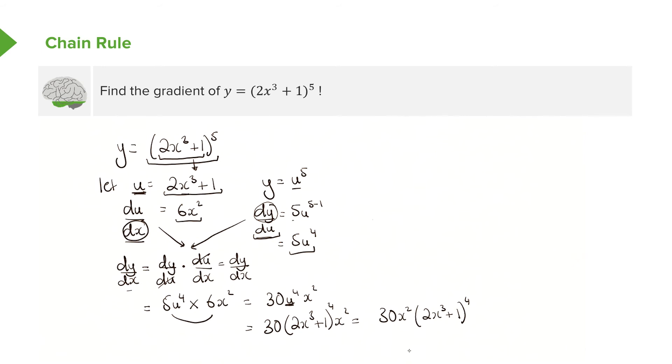And here is your differential, so there you've just found the differential of this function here, which looks fairly complicated, but just by using the chain rule, we have come to our derivative, which is 30x²(2x³ + 1)⁴.